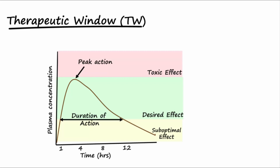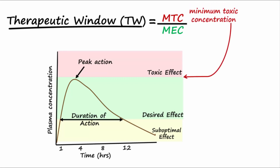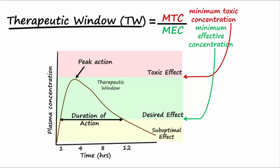The therapeutic window may be described as the minimum toxic concentration, or MTC, divided by the minimum effective concentration, or MEC. The MTC is the minimum concentration that causes toxic effect. The MEC is the minimum concentration necessary for desired drug effect. The therapeutic window is the gap between these two.